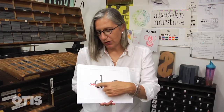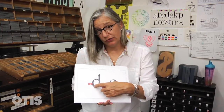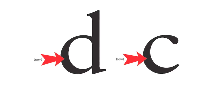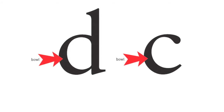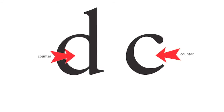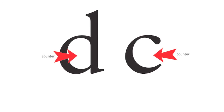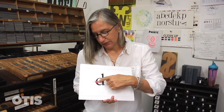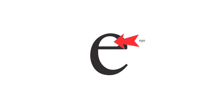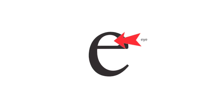A bowl. Every round letter has a bowl and a counter. It doesn't matter whether that round shape is fully enclosed or partially open — that round bowl shape is called a bowl, and the negative space inside of the bowl is called a counter. So outside shape: bowl; inside shape: counter. The E is extra special — it's the only one that has an eye. So what would be a counter on any other letter is an eye on the E.